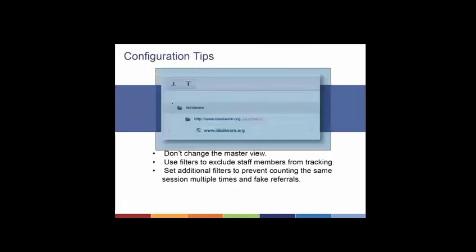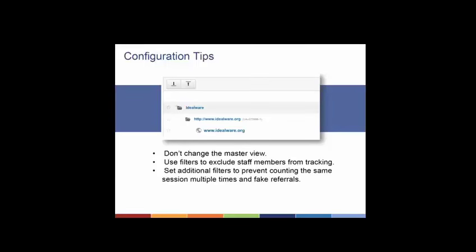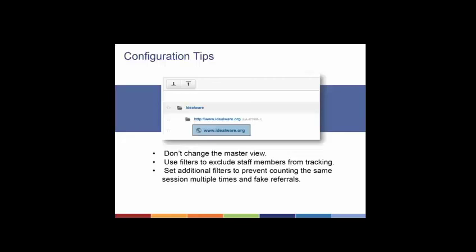In practice, your container folder is your account folder — you'll probably have one for your organization. Underneath that you have different account IDs for each web domain or property. Beneath that, you can create filters to look at data in different ways — for example, filtering out staff traffic via internal office IP addresses, or filtering out certain spam referrals. So your structure is: account, site, and filter.